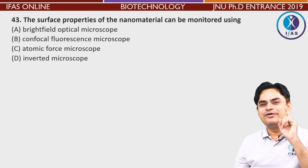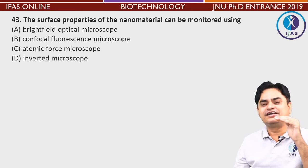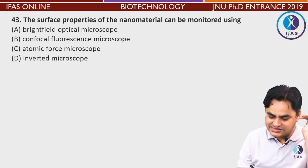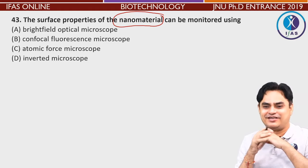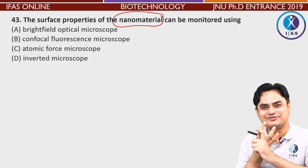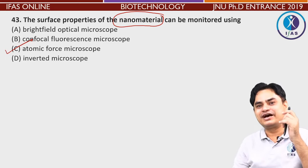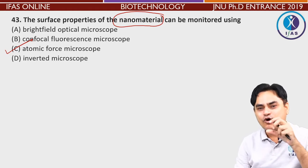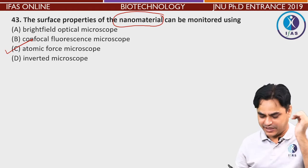Question 44 — the surface properties of nanomaterials (10 to 100 nanometer range) — how can they be monitored? By bright field optical microscopy — no. By confocal fluorescence microscopy — no. By inverted microscope — no. The only remaining option is AFM — Atomic Force Microscopy, along with SEM (Scanning Electron Microscopy). These techniques are used to observe nanoparticles and determine their shape, size, and dimensions. So the answer is AFM.